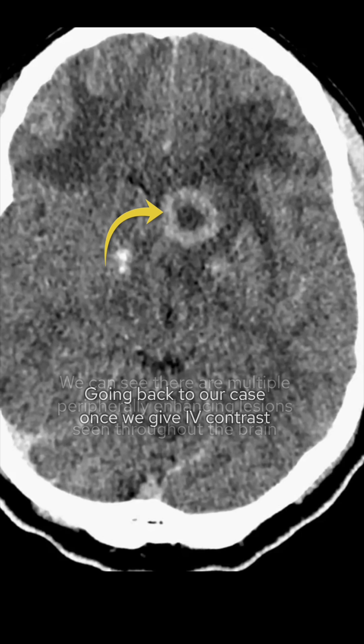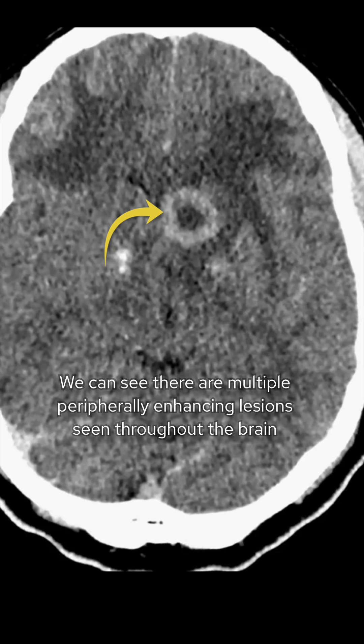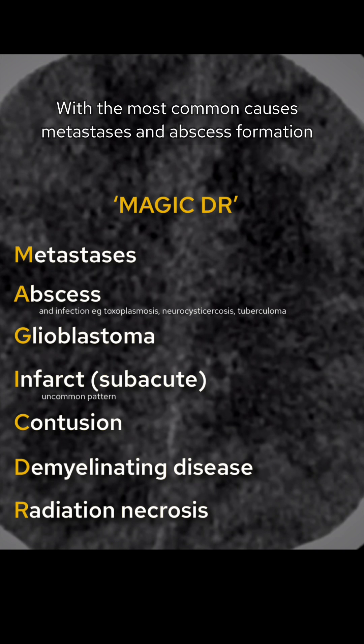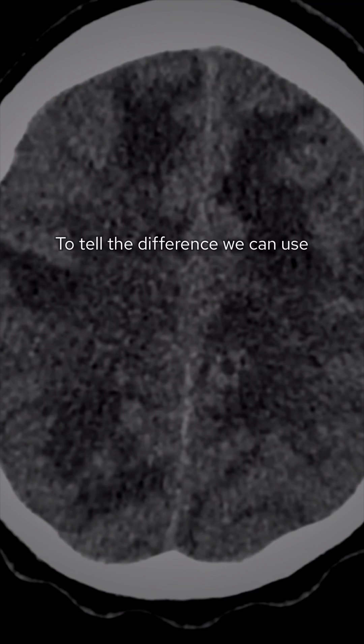once we give IV contrast we can see there are multiple peripherally enhancing lesions seen throughout the brain. Ring enhancing lesions within the brain have a differential, where the most common cause is metastases and abscess formation.